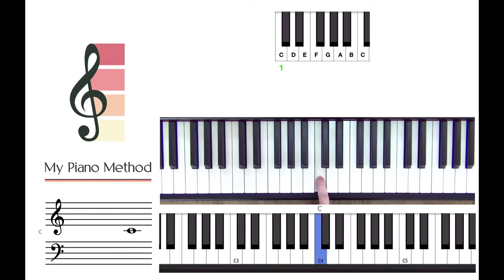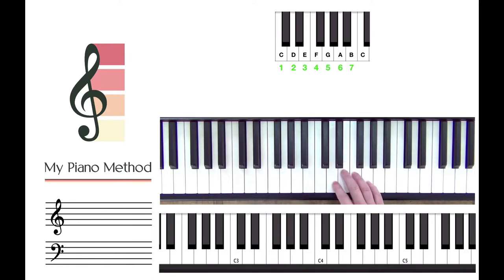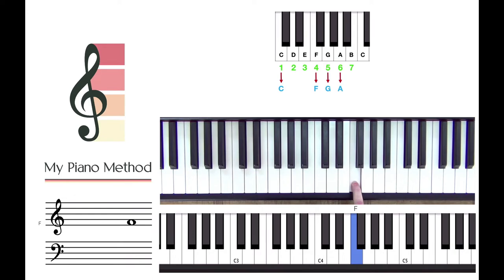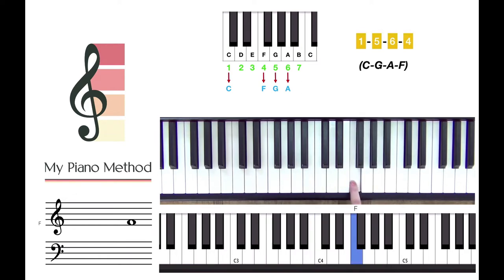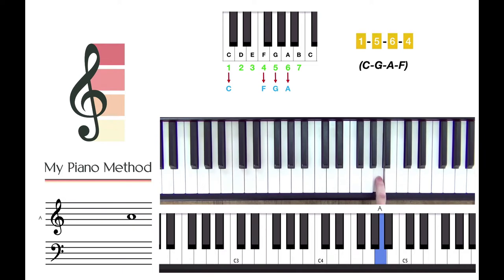The four chords are named after the number of the note. C is number one, so this is our one chord. G is number five, so this is our five chord. A is number six, giving us our six chord. And F is number four, our four chord. So the chord progression is one, five, six, four. If you ever get lost, go back to middle C — that's number one — and count up to find whichever chord you need.